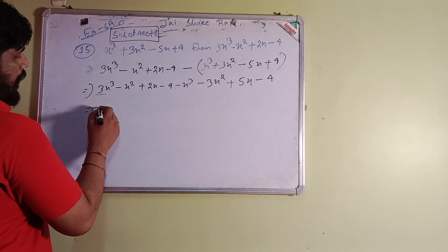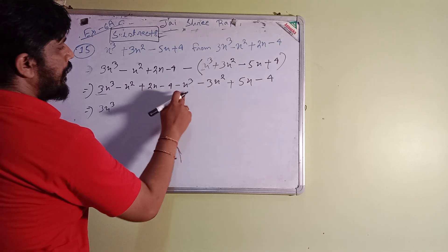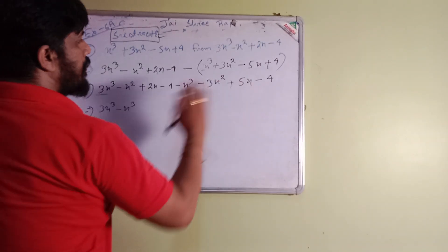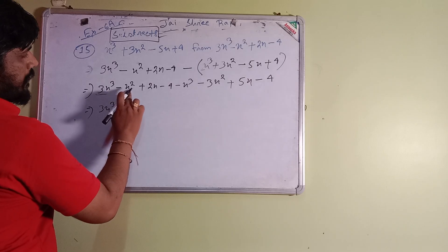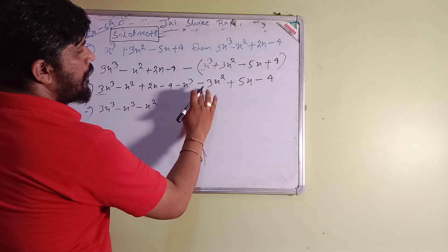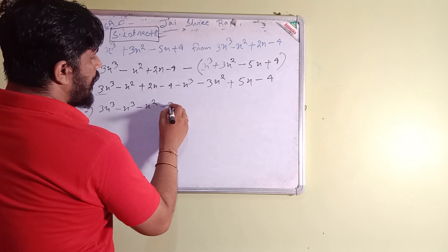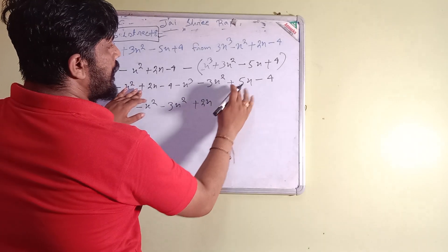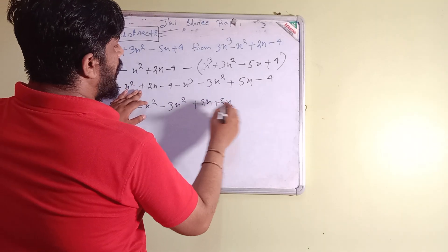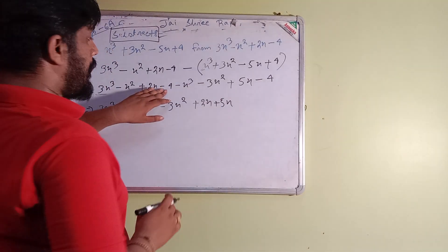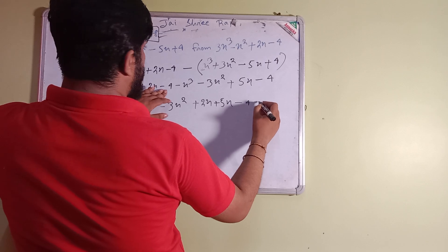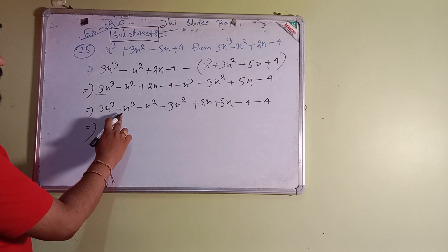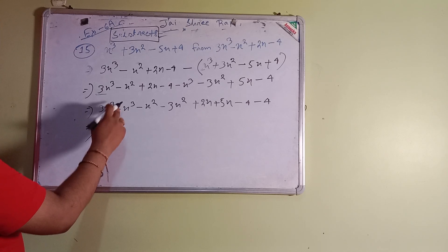Rearranging: first 3x³, then minus x³. Next, x² terms: minus x² and minus 3x². Then x terms: plus 2x and plus 5x. Finally the constant terms: minus 4 and minus 4. Now for 3x³ and minus x³, the signs are different, so we subtract.